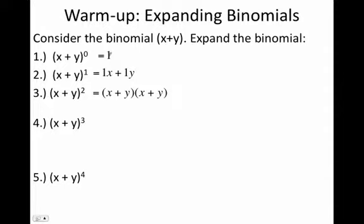Number three we would have to FOIL out, so we're going to multiply that binomial twice to itself, and what we would get is this. I'm going to leave you to do x plus y to the third on your own. Really all you need to do is take the x plus y squared that I've simplified here and multiply another x plus y to it. Go ahead and do that, and pause me now.